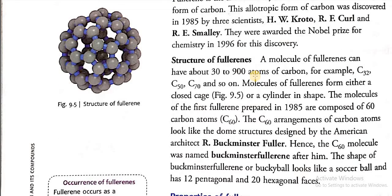Now let us see what is the structure for this fullerene. A molecule of fullerenes can have about 30 to 900 atoms of carbon. For example, C32, C50, C70, that means this is the number of carbon atoms and so on.